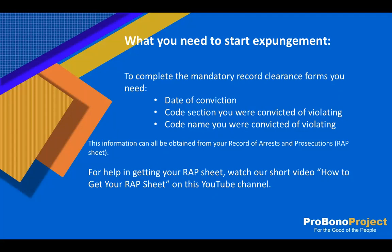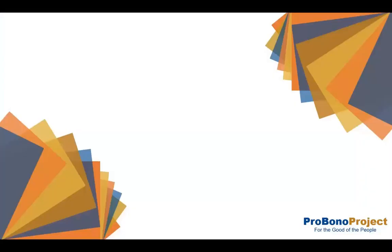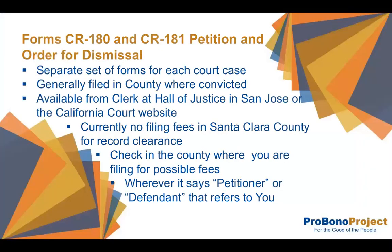You can find that information by checking with your public defender or the probation department in your local county. In most California counties, you can use forms CR180 and CR181 to petition and order for dismissal for mandatory record clearance. After you obtain your rap sheet, to begin the process you need to get these court forms CR180 and CR181. You can obtain the forms from the court clerk at the local criminal courthouse in your county or from the California Court website.